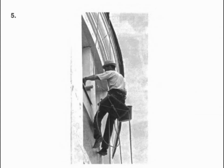Number 5: Look at the picture marked number 5 in your test book. A. The man is balanced on a ladder. B. The man is painting a picture. C. The man is reading a sign on a building. D. The man is hanging from some cables.